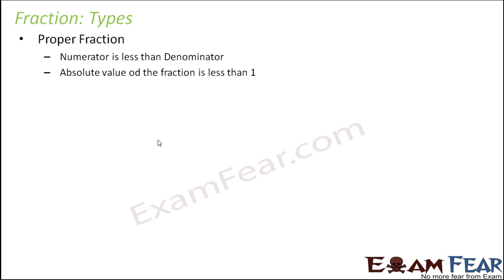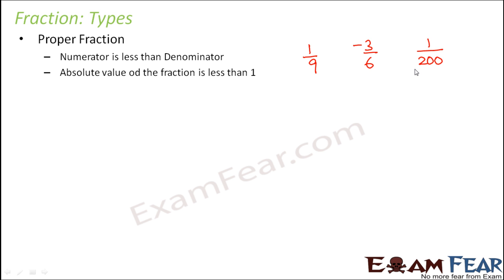A proper fraction is one where the numerator is less than the denominator. Quick recap: D for denominator, D for down — so the number present below is the denominator, and the number on top is the numerator. Examples of proper fractions are 1/9, minus 3/6, and 1/200. These are all proper fractions because the numerator is smaller than the denominator.